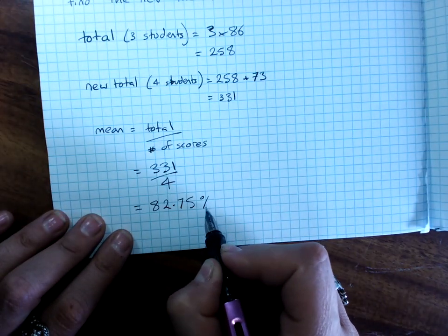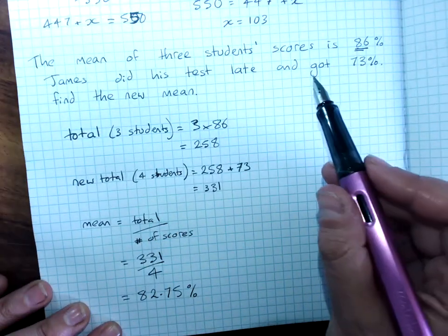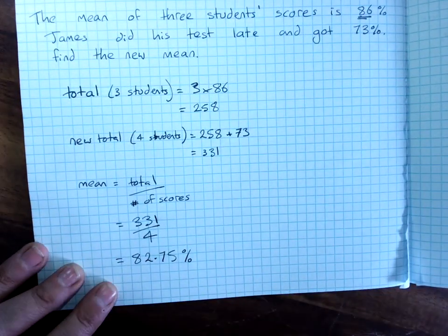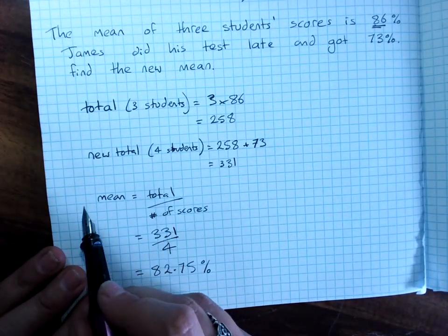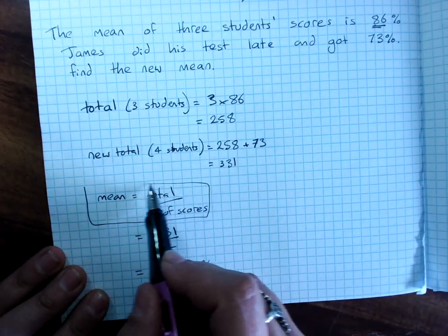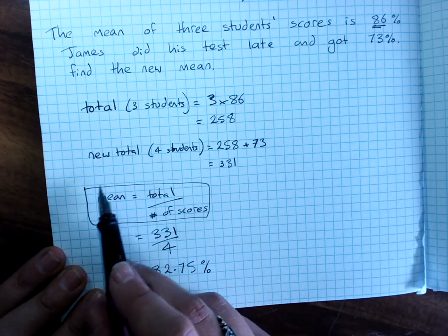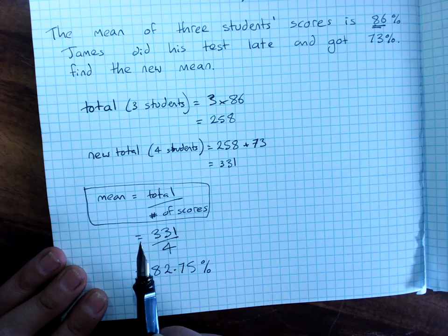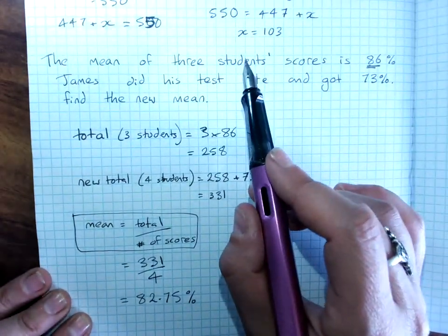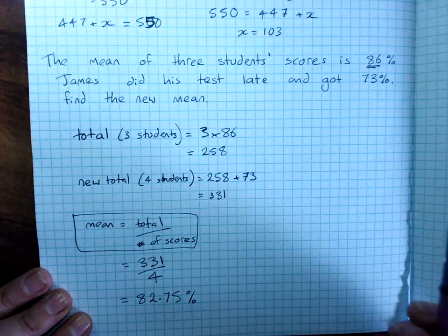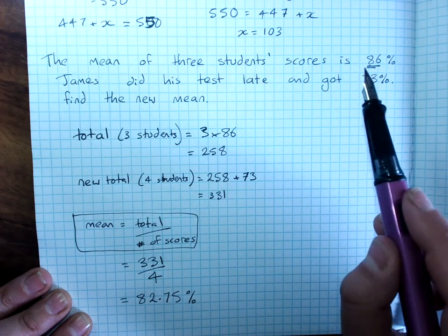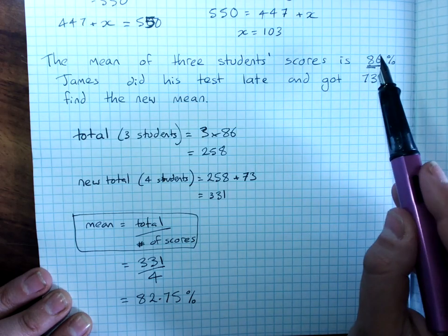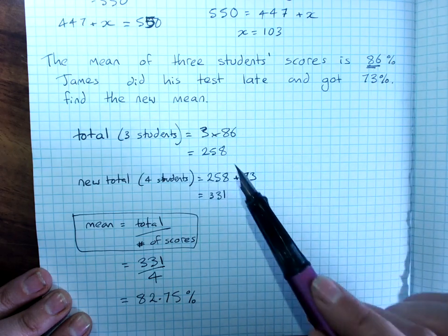And we were in percentage. And so, James, his result, even though it's pretty good, dropped the group average. So, remember, anytime you're problem solving, you're using the relationship of the mean is the total divided by the number of scores. And we don't actually have to know the scores to be able to find the total. If I know how many students or how many scores there are and what the average is, I can use that to work out the total.